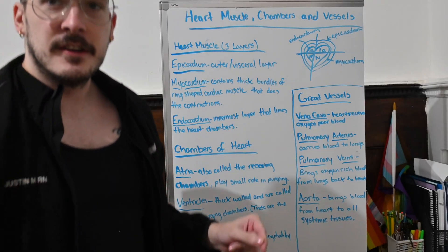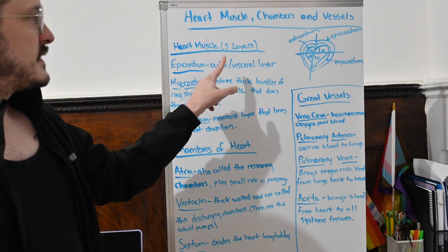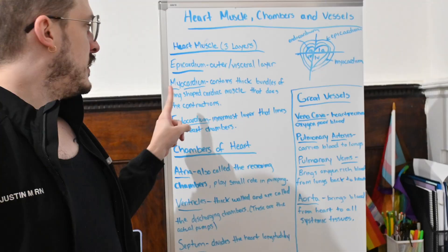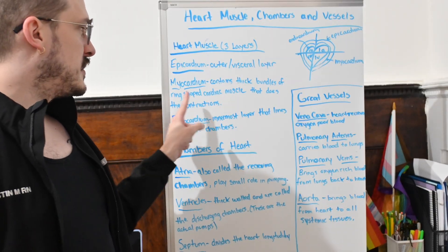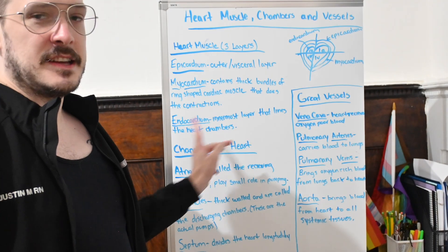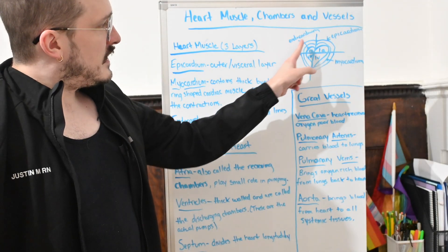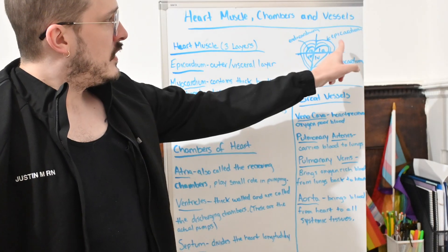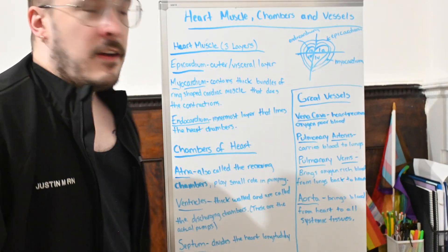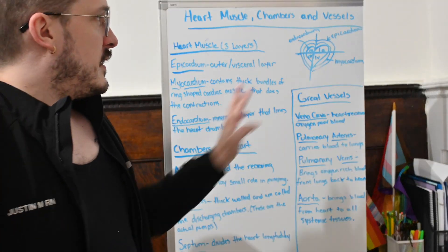The heart muscle consists of three layers: the epicardium, which is the outer visceral layer; the myocardium, which contains thick bundles of ring-shaped cardiac muscle that performs the contractions; and the endocardium, the innermost layer that lines the heart chambers. In the diagram, the endocardium points to the inner layer, the epicardium to the outer layer, and the myocardium to the middle layer.